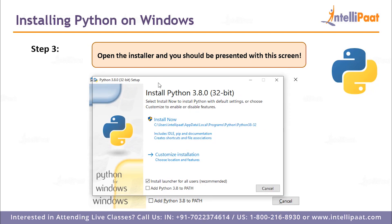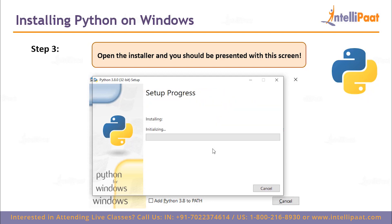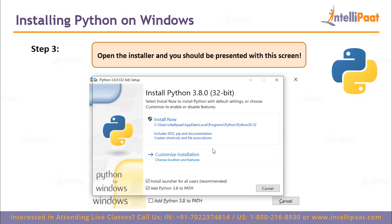The download took about a minute and we're now presented with the installation screen. Just before you hit Install Now, you can choose to customize the installation. Make sure you click the checkbox that says 'Add Python 3.8 to PATH' — what this does is set your environment variables so that as soon as you type Python in your command line, you can start using Python directly. If you're a beginner and just want to hit Python and start coding, check that option and then hit Install Now. This will ask for your administrator password.